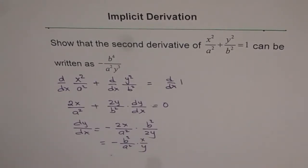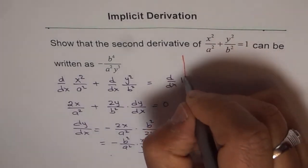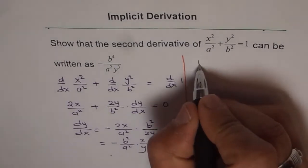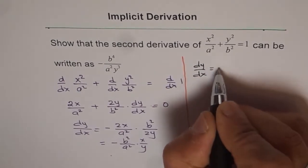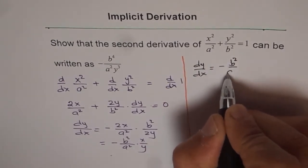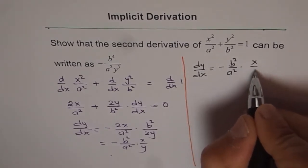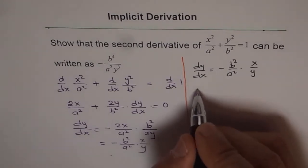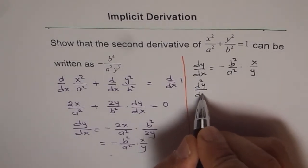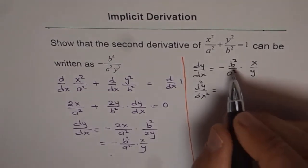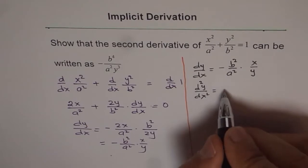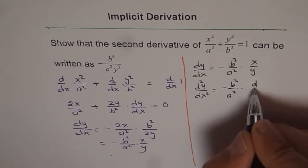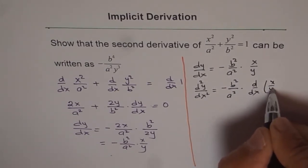So that is the derivative: dy/dx equals minus b squared over a squared times x over y. Now, to find the second derivative, we take the derivative again on both sides. We get d²y/dx² equals the derivative of the right-hand side. The first term b squared over a squared is constant, so we keep it outside: b squared over a squared times d/dx of x over y.